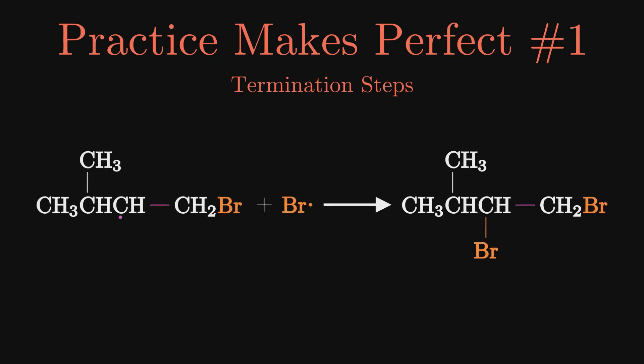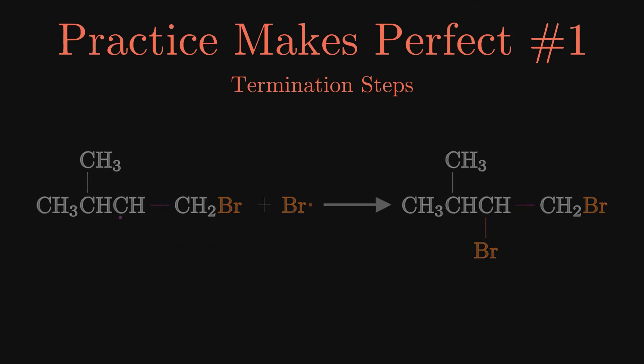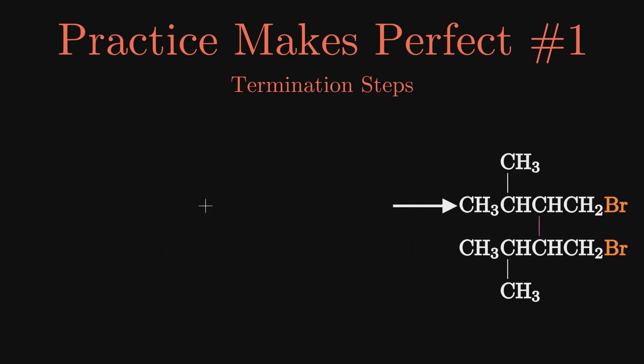The third termination step is if two alkyl bromide radicals react forming an even larger dihalide product, which you would probably name 3,4-dibromomethyl-2,5-dimethylhexane. And honestly that would be close enough.